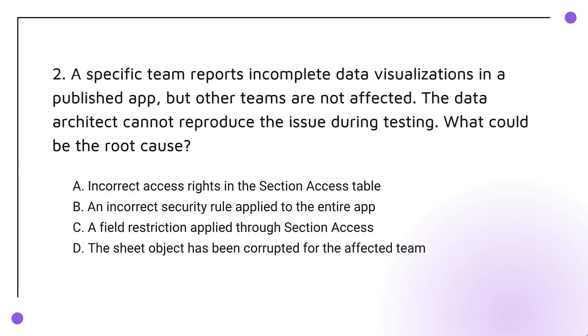The correct answer is: If some users aren't seeing the full data, it's probably because a field restriction in section access is blocking them. This kind of rule can limit what data certain teams are allowed to see.